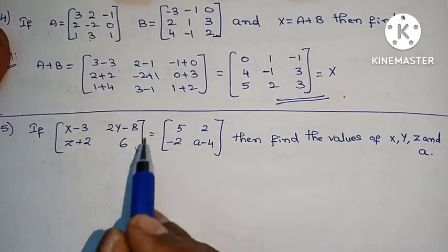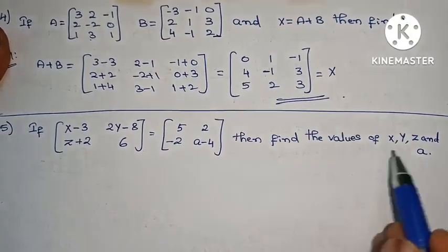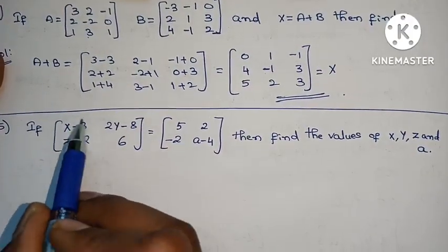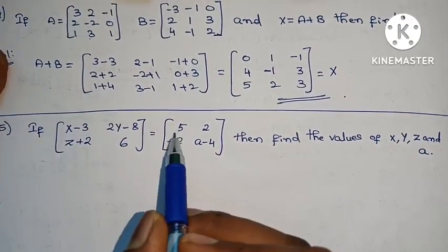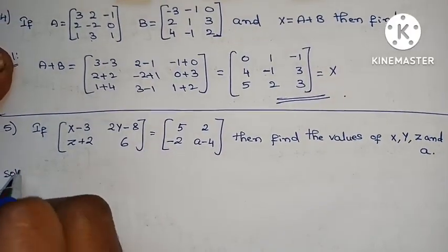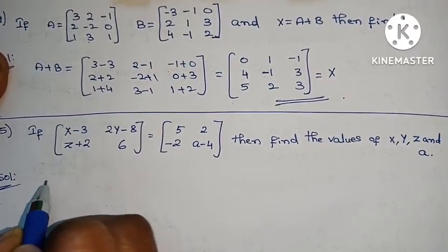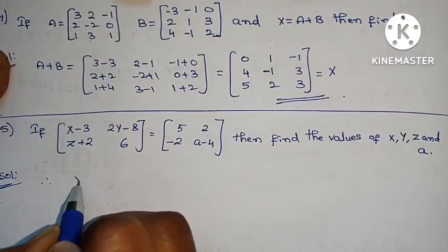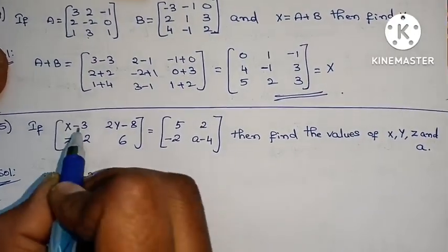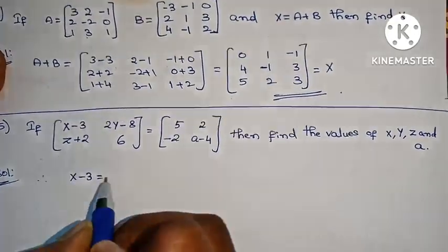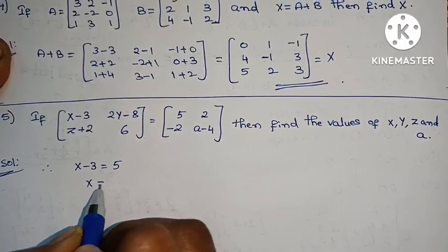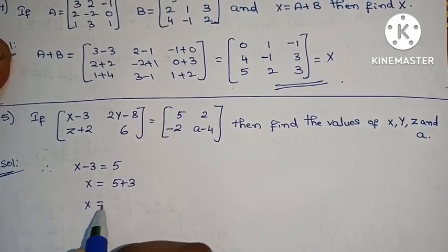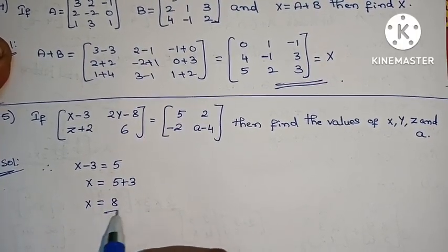Next problem: if this matrix equals to this matrix, then find the values of x, y, z, and e. Here the first value equals the first value on the other side. Therefore x minus 3 equals 5, and x equals 5 plus 3, so x equals 8.